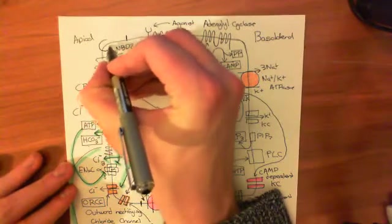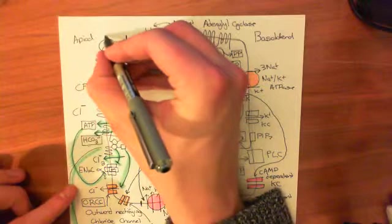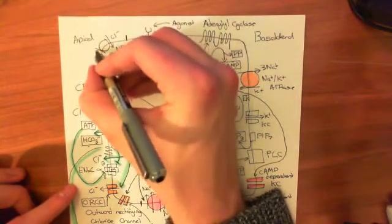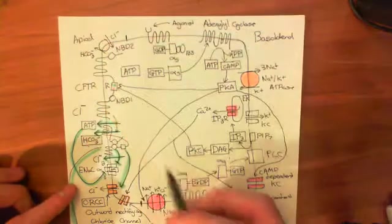You have another protein called the chloride bicarbonate antiporter, which basically takes a chloride into the cell, and then removes the bicarbonate. So basically, it swaps the chloride for the bicarbonate.